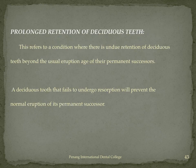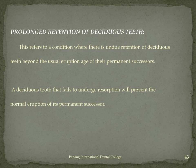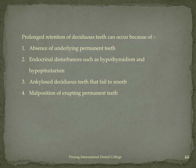Prolonged retention of a deciduous tooth refers to a condition where there is undue retention of deciduous teeth beyond the usual eruption age of their permanent successors. A deciduous tooth that fails to undergo resorption will prevent normal eruption of its permanent successor, or it can be a clue that the permanent successor is missing. Prolonged retention can occur due to: absence of an underlying permanent tooth, endocrinal disturbances such as hypothyroidism and hypopituitarism, an ankylosed deciduous tooth, or malposition of the erupting permanent tooth.